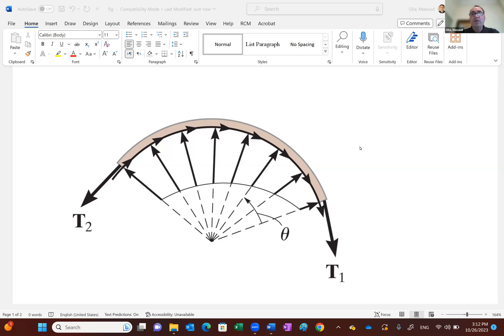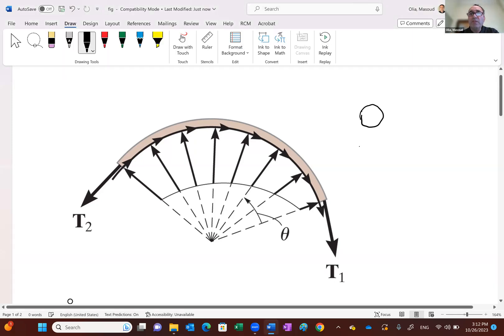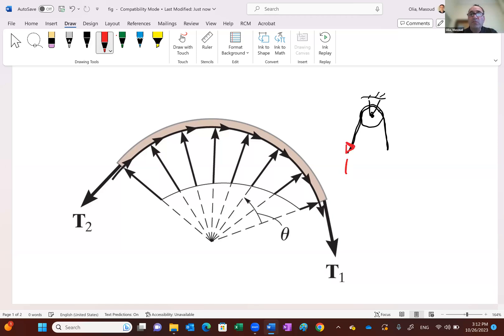In many cases, you have a cable or a belt going around the pulley or a surface. In the past, we always assumed that if you have a cable going around a frictionless pulley, the tension on each side of this cable should be the same. So if the tension here is T, over there should be T, provided that there's no friction or minimal friction.